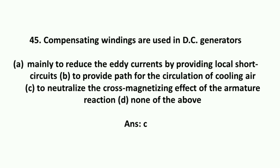Compensating windings are used in DC generators to neutralize the cross-magnetizing effect of the armature reaction.